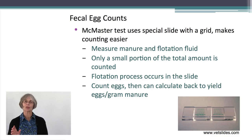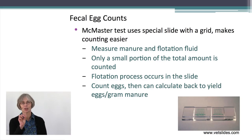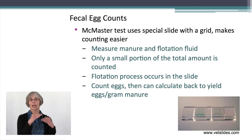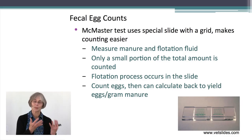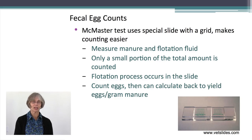With the McMaster test it's still a flotation procedure, but we use a special slide with a grid, which makes the counting much easier. We still measure out the manure and the flotation fluid, mix them together, but only a small portion of that mixture is counted. The flotation process actually occurs in the slide itself. Once you've put your sample in the slide, you count the eggs and calculate back to yield the number of eggs per gram of manure.